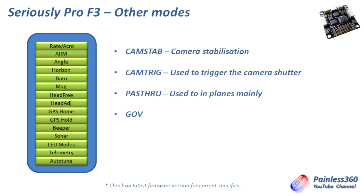There are other modes I won't cover in as much detail: camera stabilization and camera trigger, which are used with a gimbal to control how it responds. There's pass-through, where you pass the control input straight through the board out to the servos controlling the control surfaces — very handy if you have a plane, so you can fly it as though there's no flight controller, then turn off pass-through and let the board take over. Finally there's a mode called gov — I can't find much about it right now, but as the Cleanflight documentation is updated that will change. Always keep an eye on the Cleanflight wiki as things change all the time.